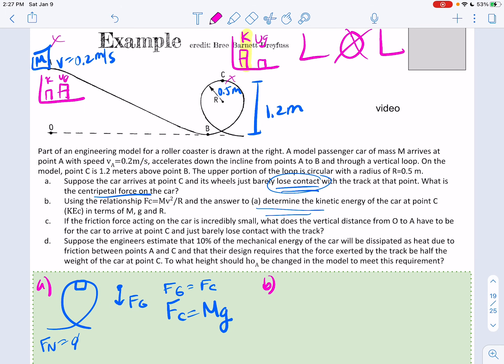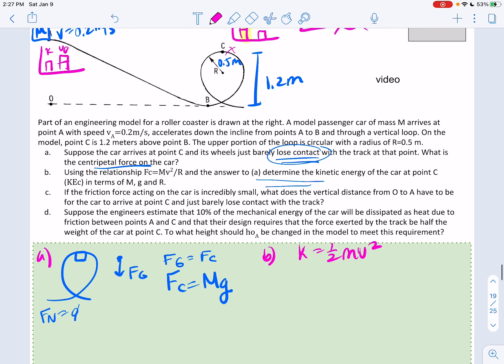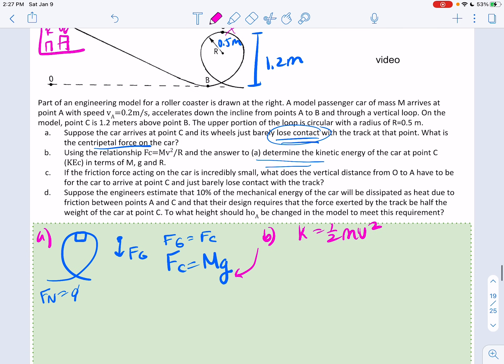All right, so if I'm just looking to find the kinetic energy here at point C, I'm going to need to know one-half MV squared. So this is part B. I know the kinetic energy is one-half MV squared, but I'm going to need to know V. And I'm going to get V from here. If I know my centripetal force is MG and that equals MV squared over R, then I can see my velocity is going to be radical RG.